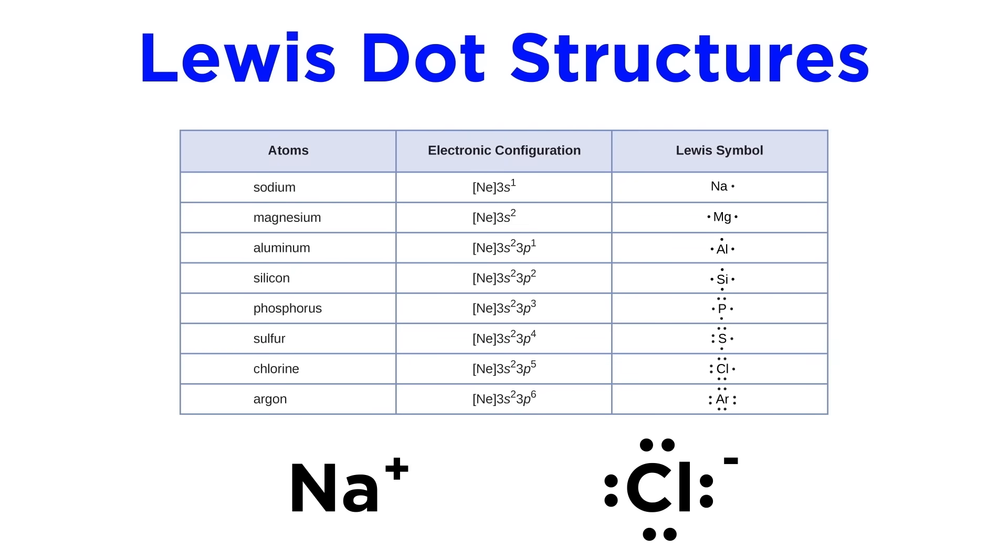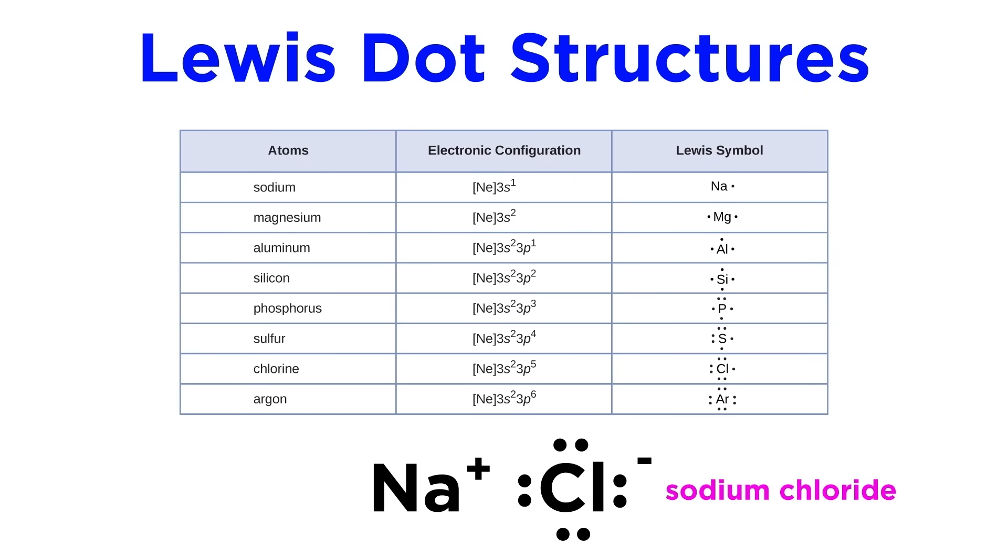These individual Lewis symbols are what we combine in order to show a Lewis dot structure for a compound. If that compound is ionic, we simply place the Lewis structures of the ions next to each other, such as with sodium chloride here.